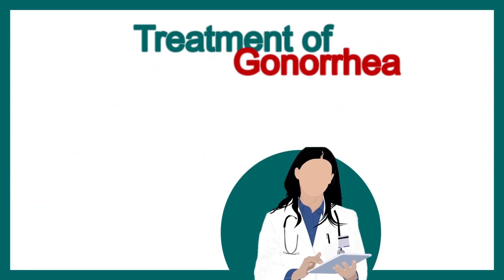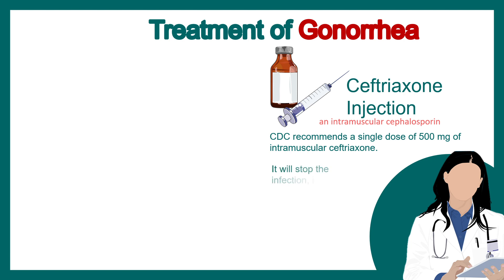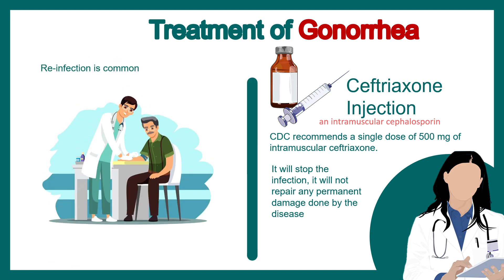For treatment of gonorrhea, WHO prescribes a ceftriaxone injection — an intramuscular cephalosporin antibiotic. CDC recommends a dose of 500 mg intramuscular injection. This will stop the infection, but it will not repair damage that has already occurred. New damage won't happen because the bacteria will be dead. Rapid diagnosis is important, and quick treatment ensures better recovery. There could be reinfection, so a follow-up after 3-4 months is highly advisable.